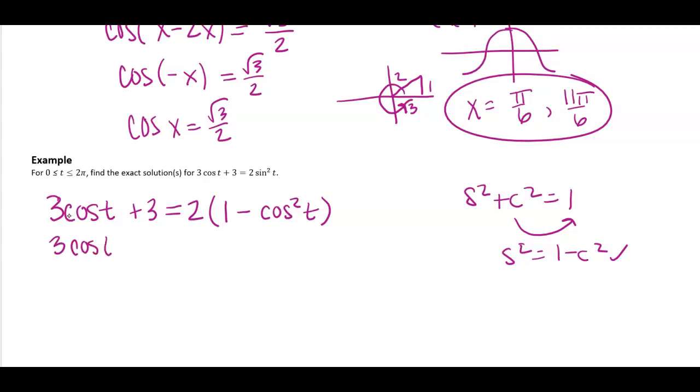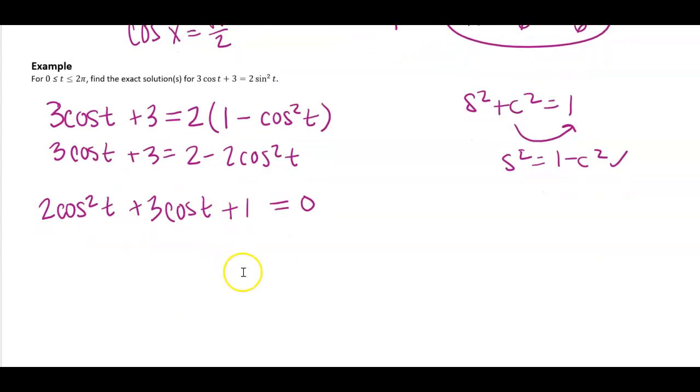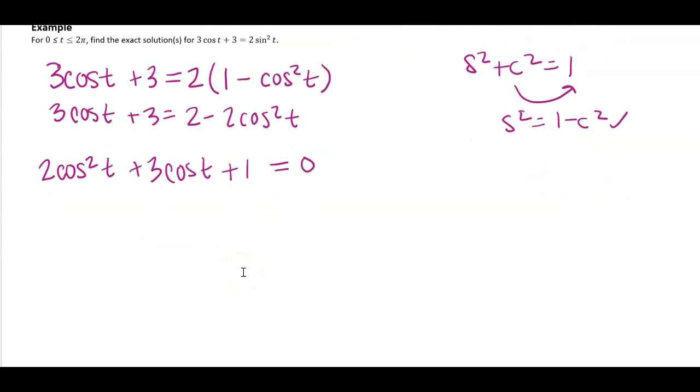Alright, so let's go ahead and distribute out the 2. And then let's add 2 cosine squared over and subtract 1. Alright, this looks very similar to the problem that we had in the other question. The only difference though is the sine here.